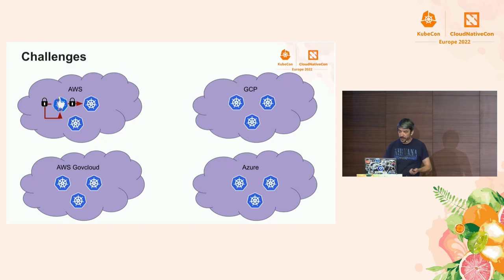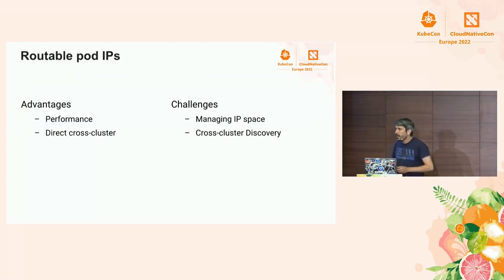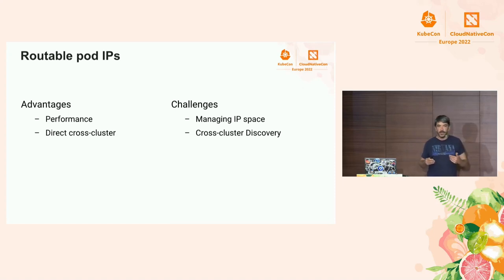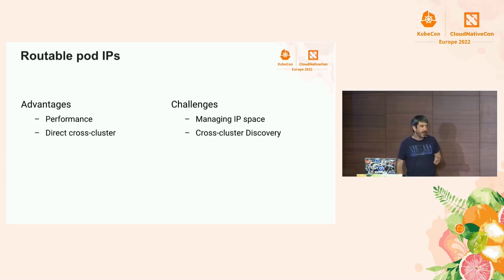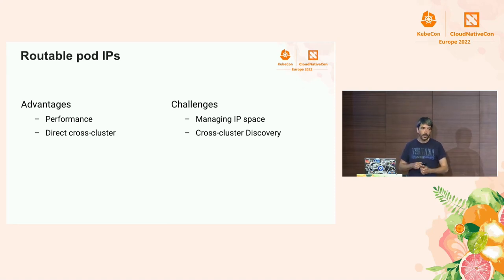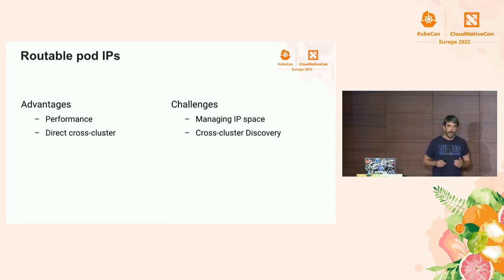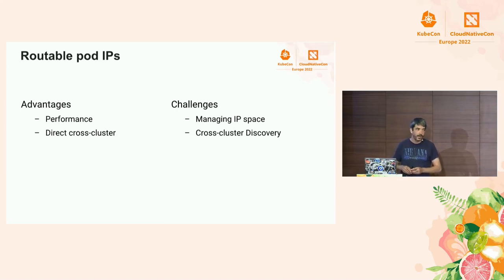One of the constraints of our design is we want to efficiently route traffic between workloads. Imagine you have a Kafka cluster running in one Kubernetes cluster and Kafka clients in another — you need all pods to have IPs routable within your network. This is a design choice we made very early on because it's more performant — no overlay — and it allows for inter-cluster communication. Of course, it's not as easy as overlays, which are simple to set up with independent clusters, but with routable IPs you must carefully manage your IP space and subnetting across clusters.